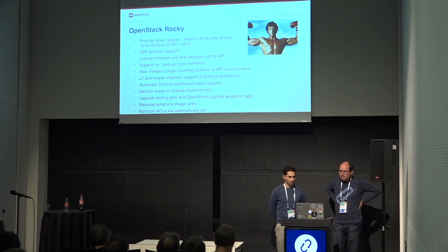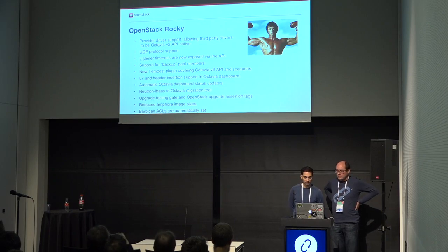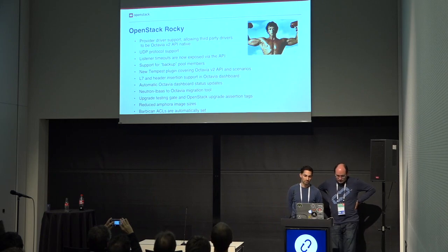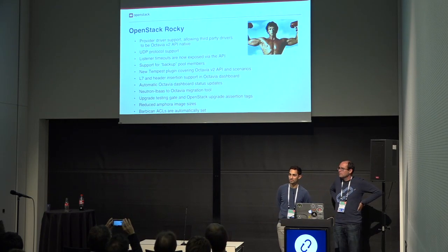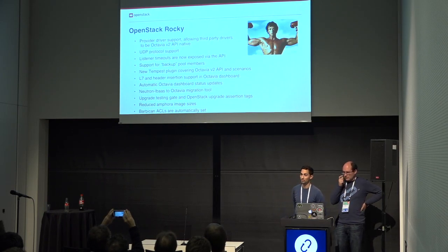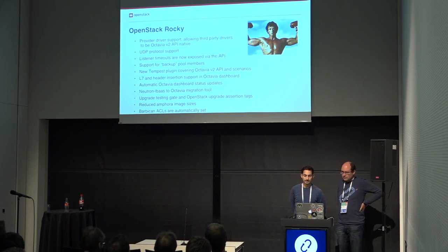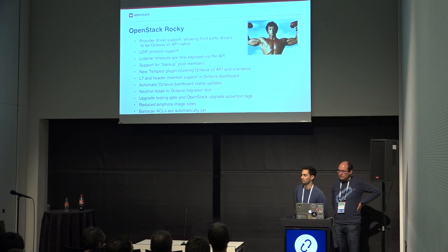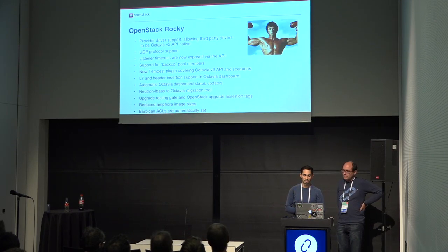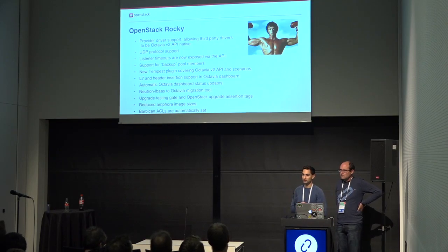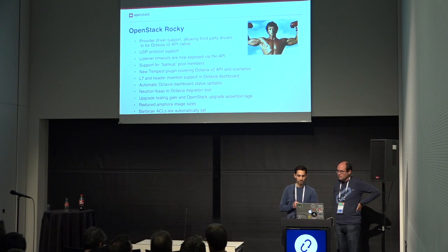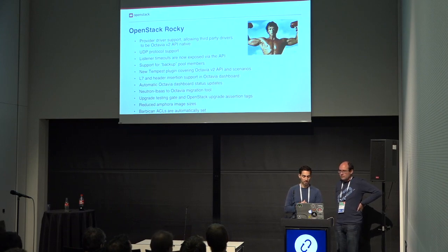For Rocky, which was released a couple of weeks ago, we have a few features you can start using now. The first one we highlight is provider driver support. Before we only had one driver, which was the Octavia driver — now it's called the Amphora driver. We renamed it to be easier to understand. It also allows third-party providers to include their own drivers. VMware has already written their driver, and there is also the OVN driver, an open source implementation under the OpenStack project repos.